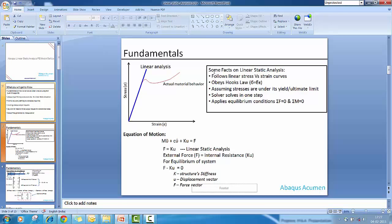When we discuss linear static analysis, it follows the linear stress-strain curve. It follows this blue line and obeys Hooke's law where stress is directly proportional to strain. When we conduct a linear static analysis, we have to verify that all stresses are below yield or ultimate limit stress. Then only the results will be meaningful. And the solver solves this simulation in one step.